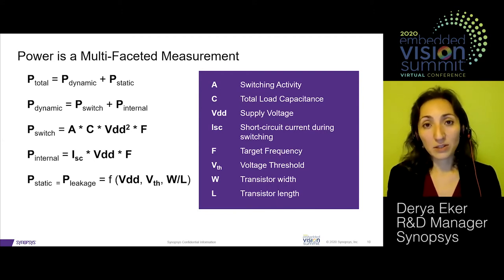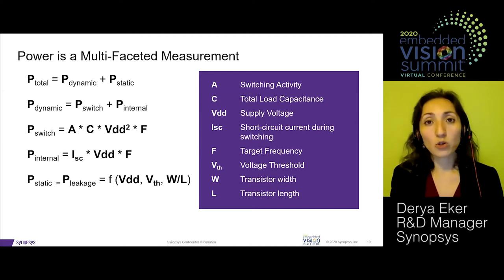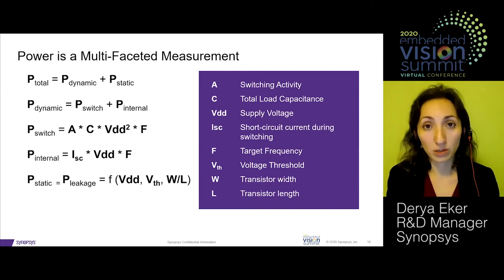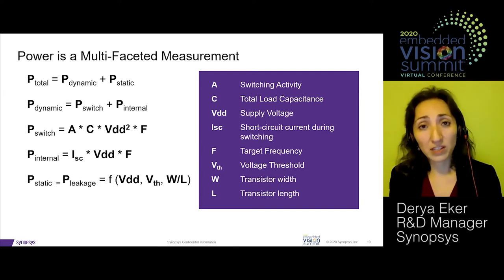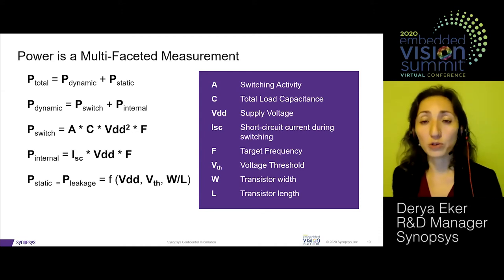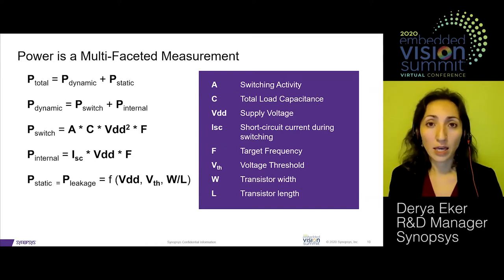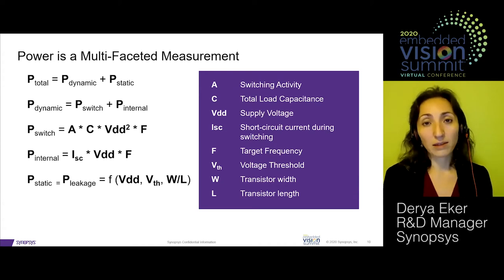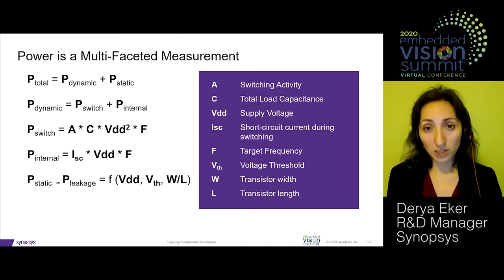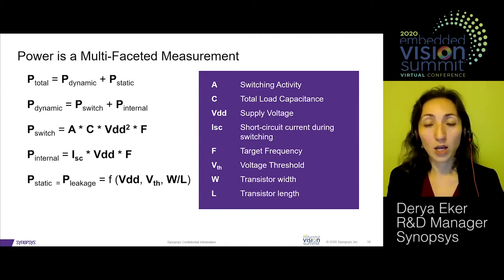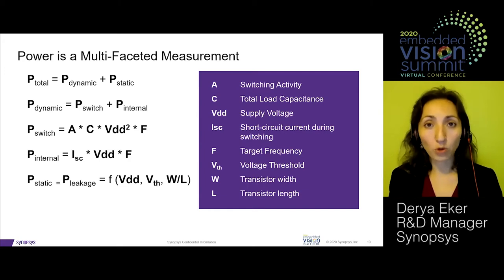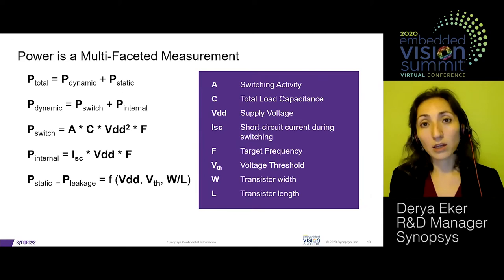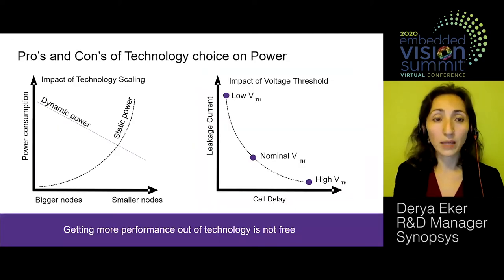Power has two main components: dynamic power and static power. Dynamic power is comprised of switching power and short-circuit power. Static power is related to leakage current—the current flowing through transistors even without switching activity. Each component is greatly affected by switching activity, capacitance, supply voltage, frequency, and technology-related parameters. These all affect the quality of results in power estimation and must be taken explicitly into account.